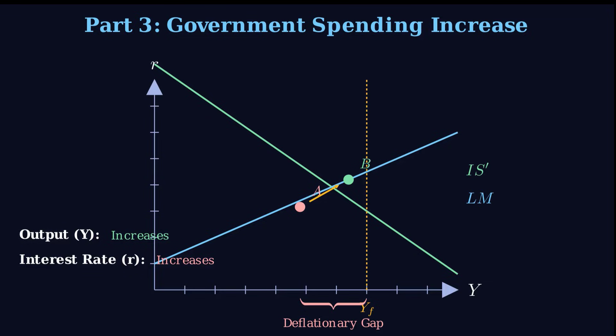What's fascinating here is that the higher interest rate isn't just caused by the government issuing bonds — it's caused by the success of the stimulus in boosting the economy. That is the key insight. That rise in R is the price you pay for the transactional needs of a booming, recovering economy. You see it perfectly on the graph: the IS curve shifts right and slides up the fixed LM curve to that new Point B — greater output and a higher interest rate happening simultaneously.